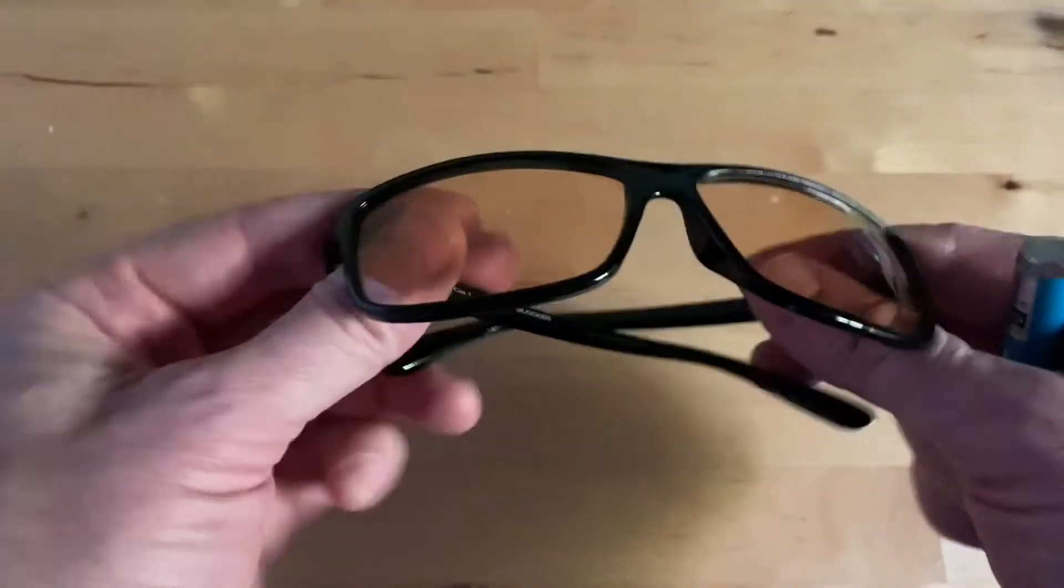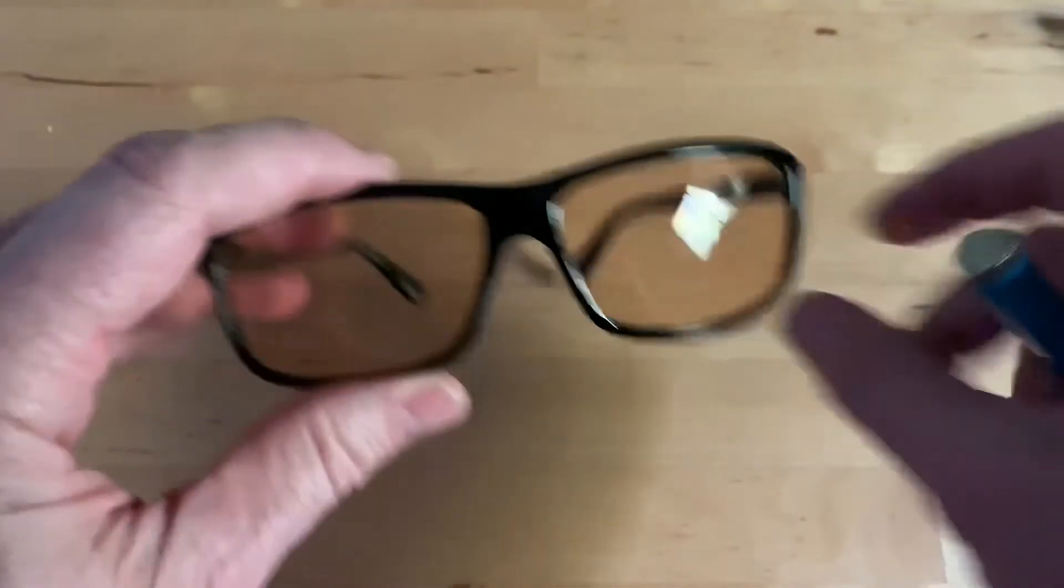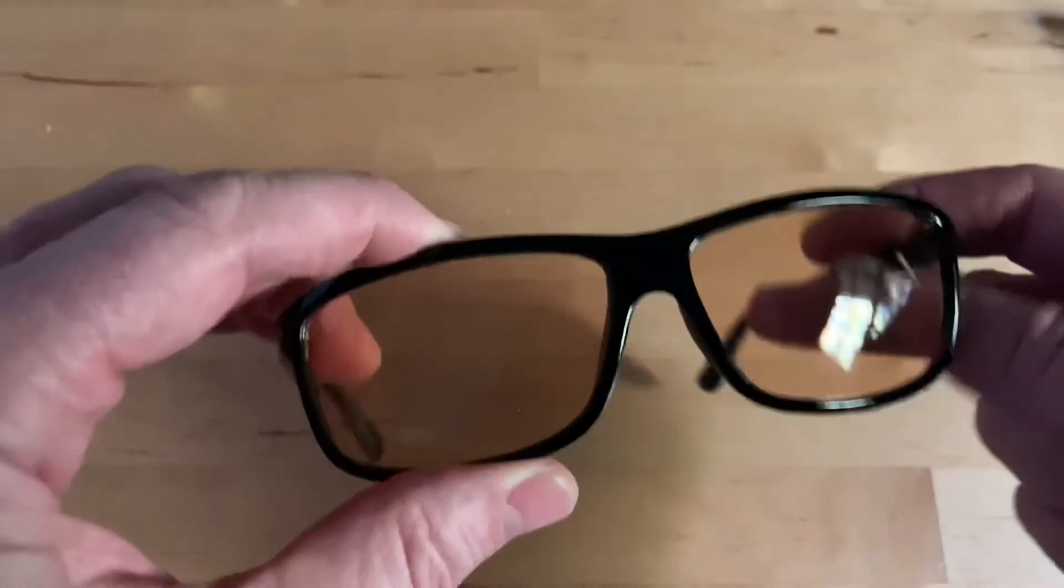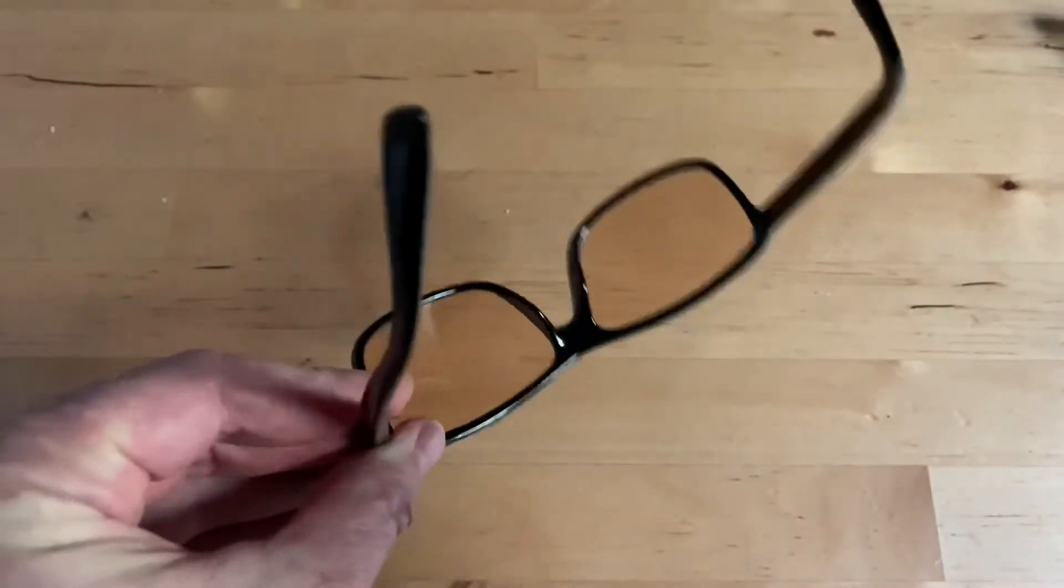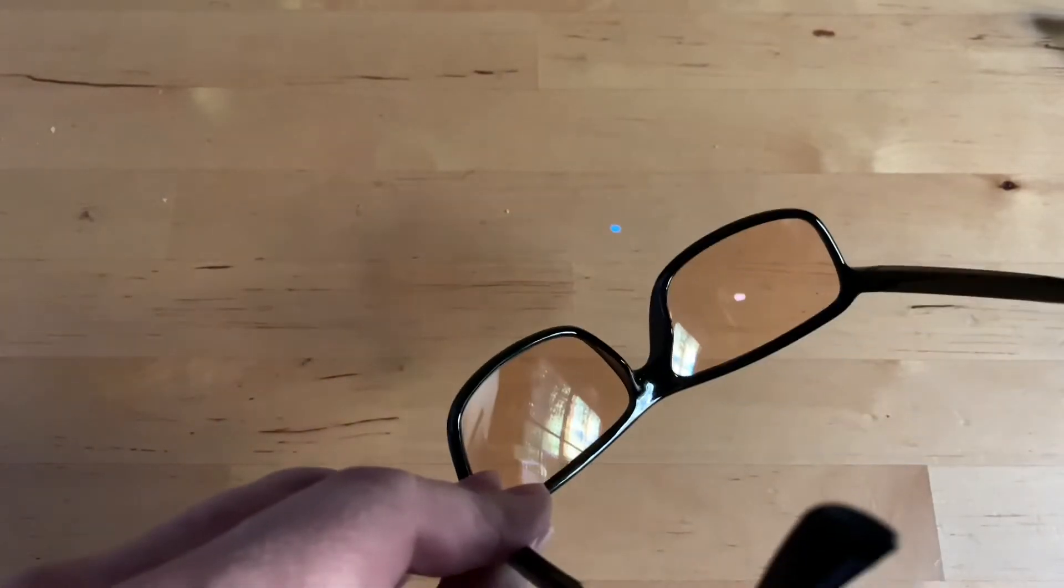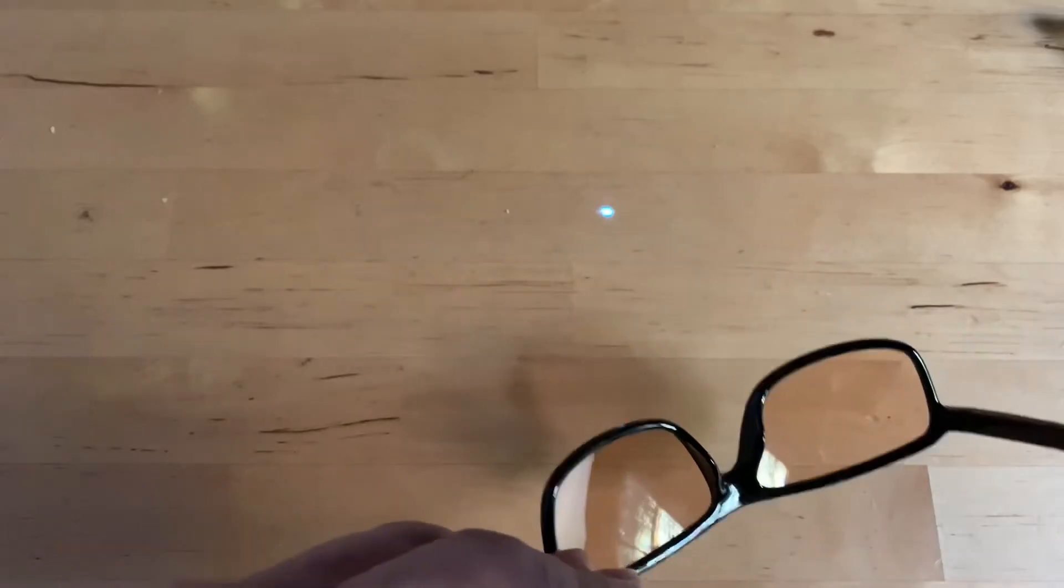But speaking of the cheaper ones, these are Rapid Eyewear. There should be links in the description to all this stuff if you want to buy some. You can see the yellow tint on them, so you look like you're trying to be the lead singer of a band from the 80s. You can see it does reduce the blue when you look at the dot.